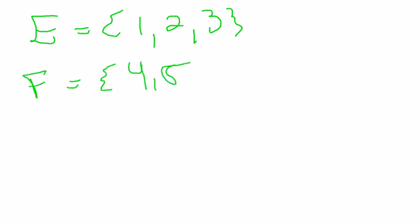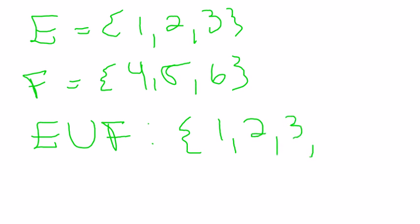Let's just do one more. And I'll have E is 1, 2, and 3. And F is 4, 5, and 6. And again what is E union F? That means I'm going to pick everything. I have 1, 2, 3, 4, 5, and 6.